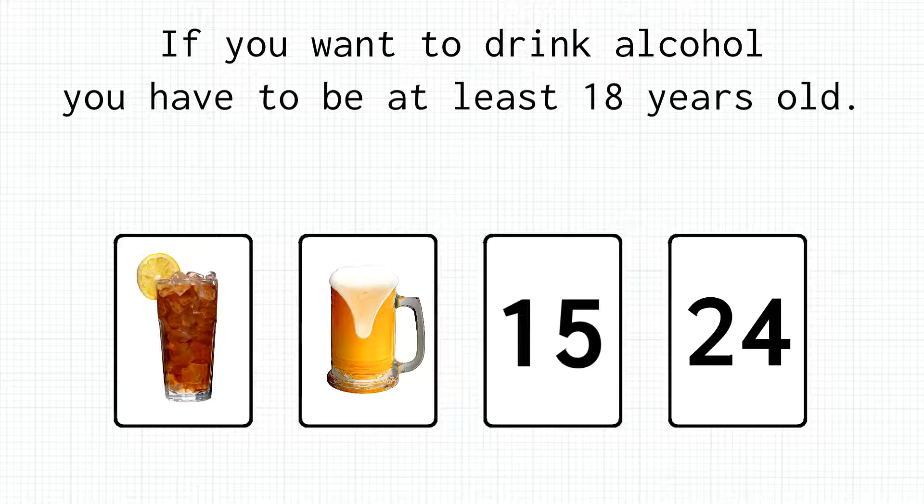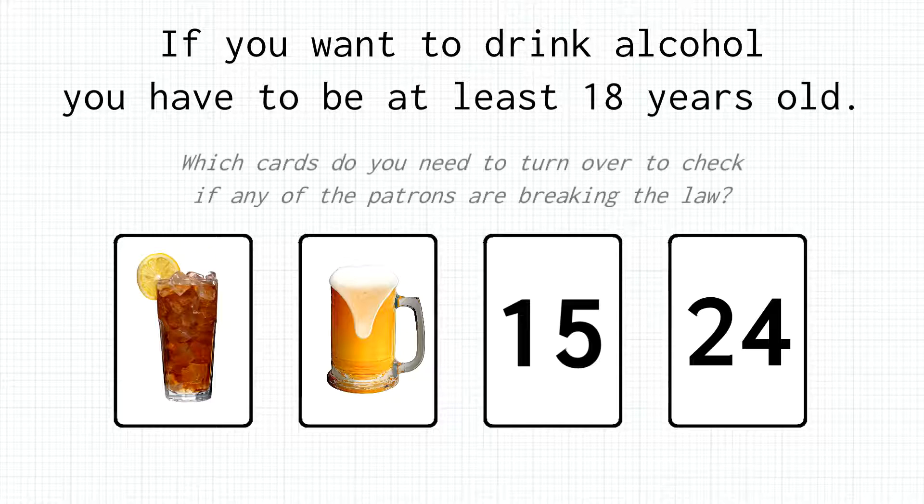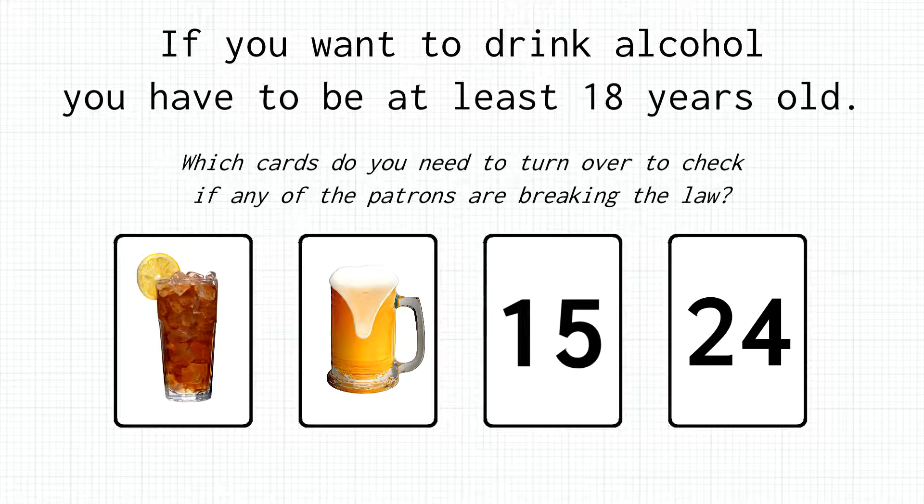One is labelled Ice Tea, one is labelled Beer, one is labelled 15, and one is labelled 24. Which cards do you need to turn over to check if any of these patrons are breaking the law?